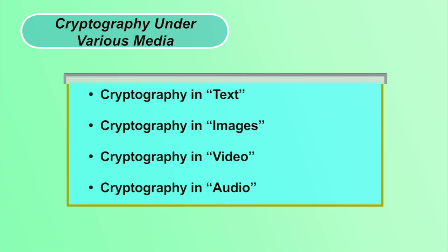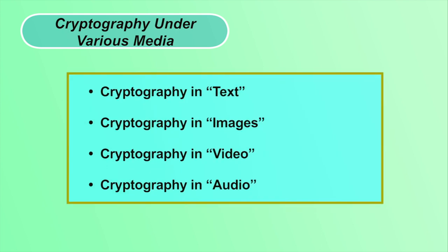Cryptography can be applied to various media. Input can be anything: text, images, audio, video, etc. The encryption algorithm converts the original form of the input to ciphertext, and the decryption algorithm converts the ciphertext back to the original form.